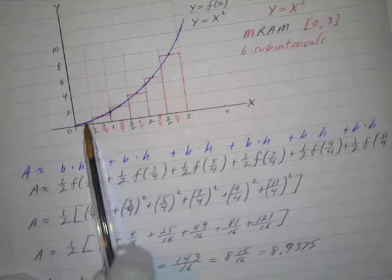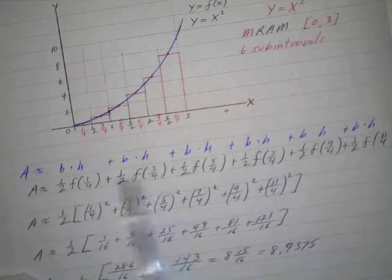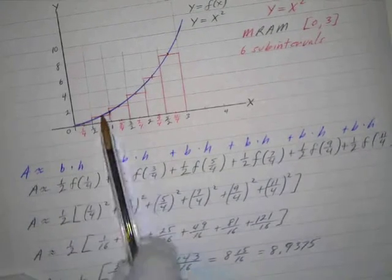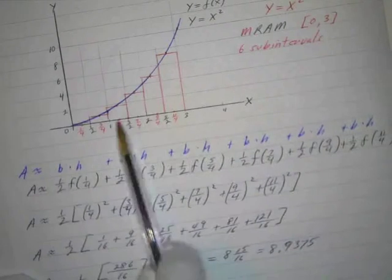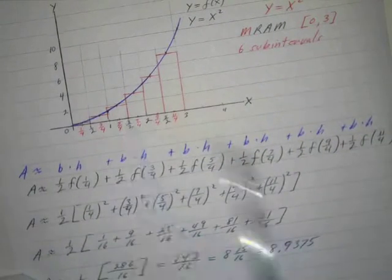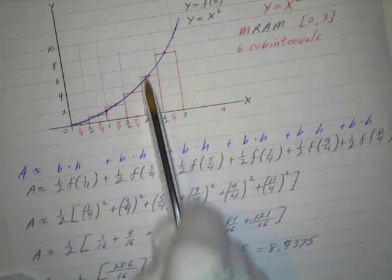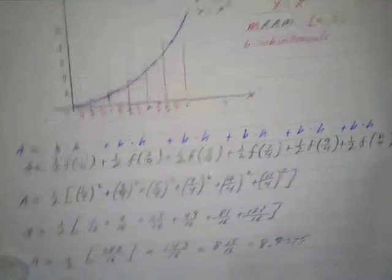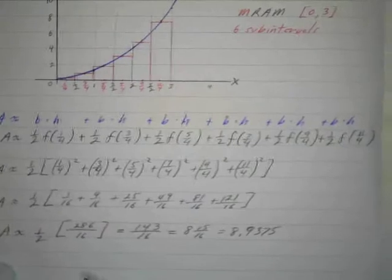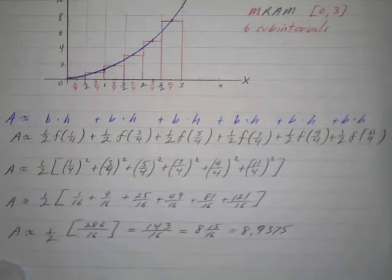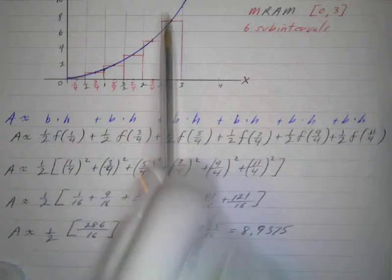f of one-fourth will give me the height of this rectangle, f of three-fourths will give me the height of this rectangle, f of five-fourths will give me the height of that rectangle, f of seven-fourths will give me the height of that rectangle, f of nine-fourths will give me the height of that rectangle, and f of eleven-fourths will give me the height of that rectangle.